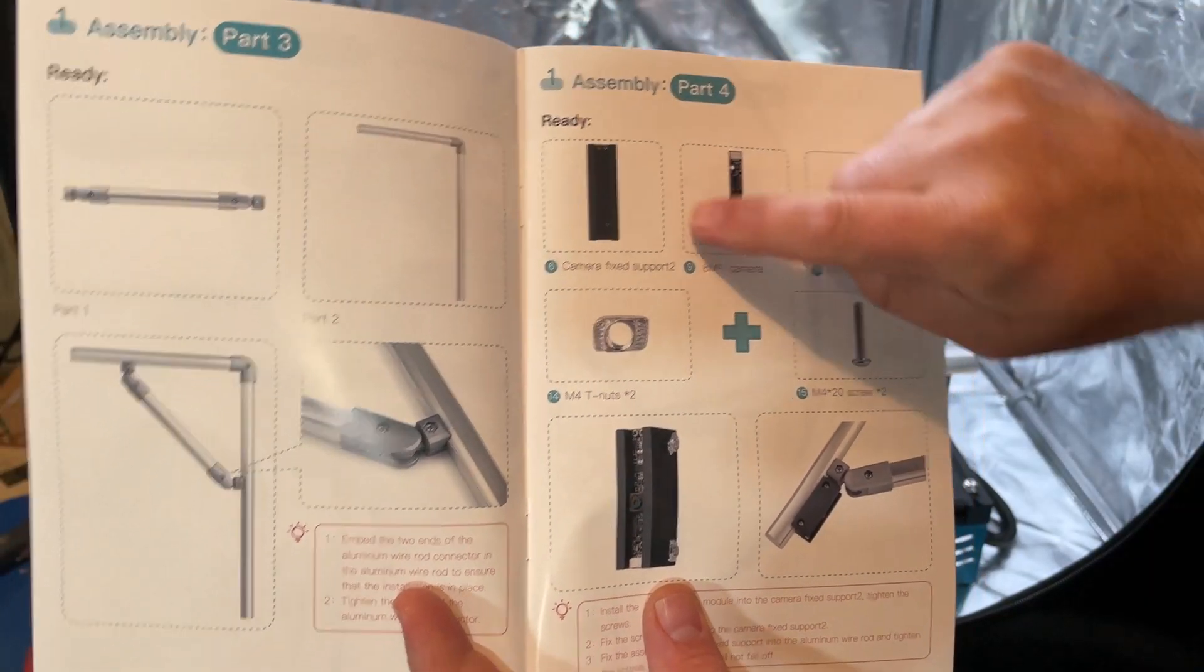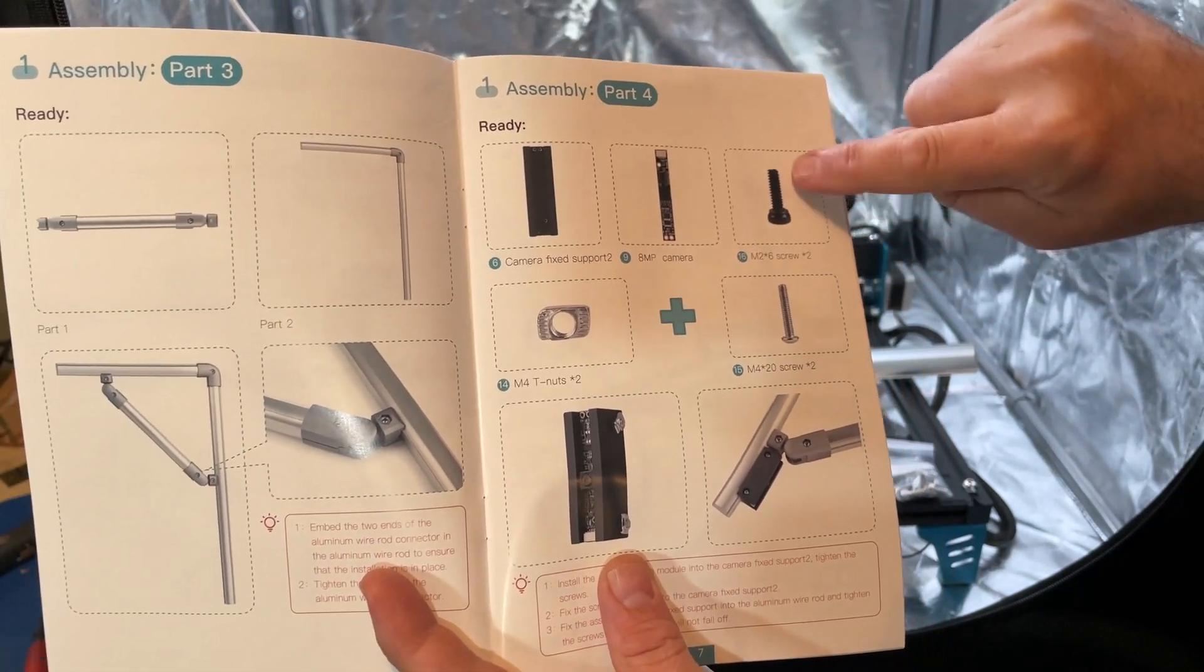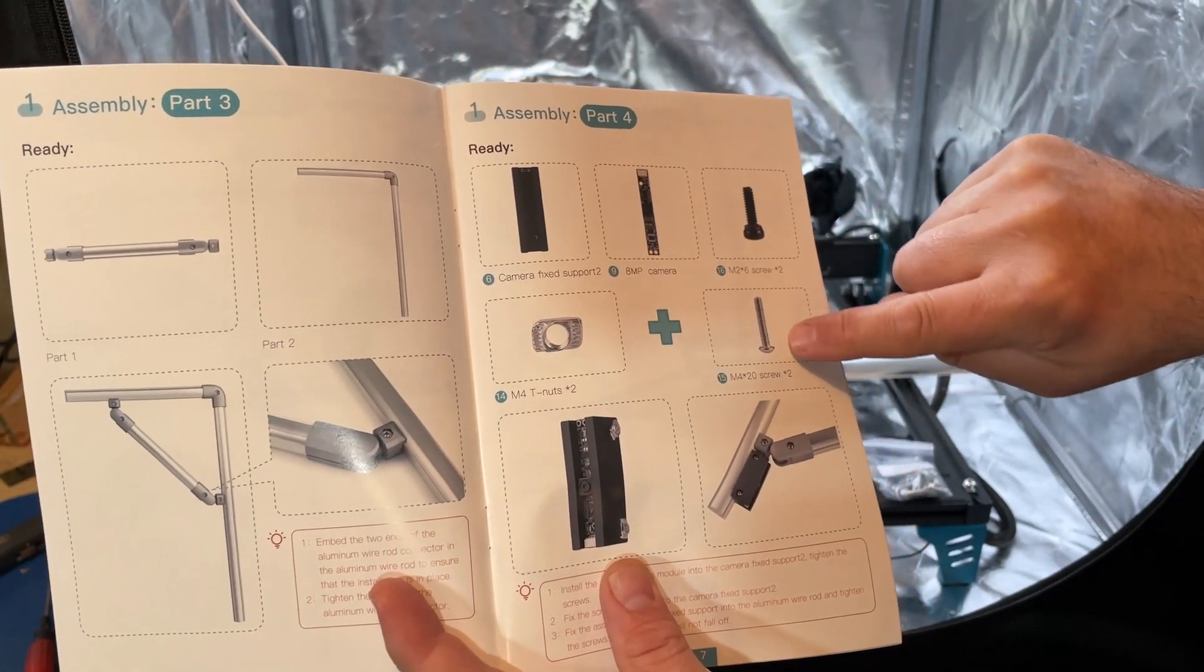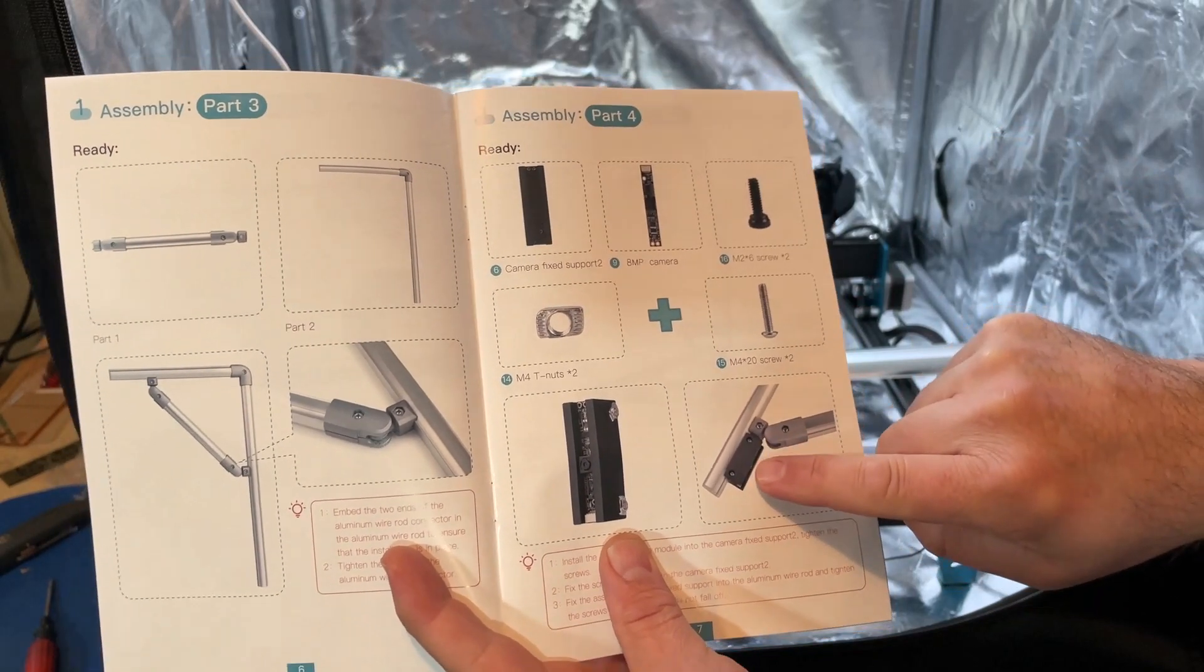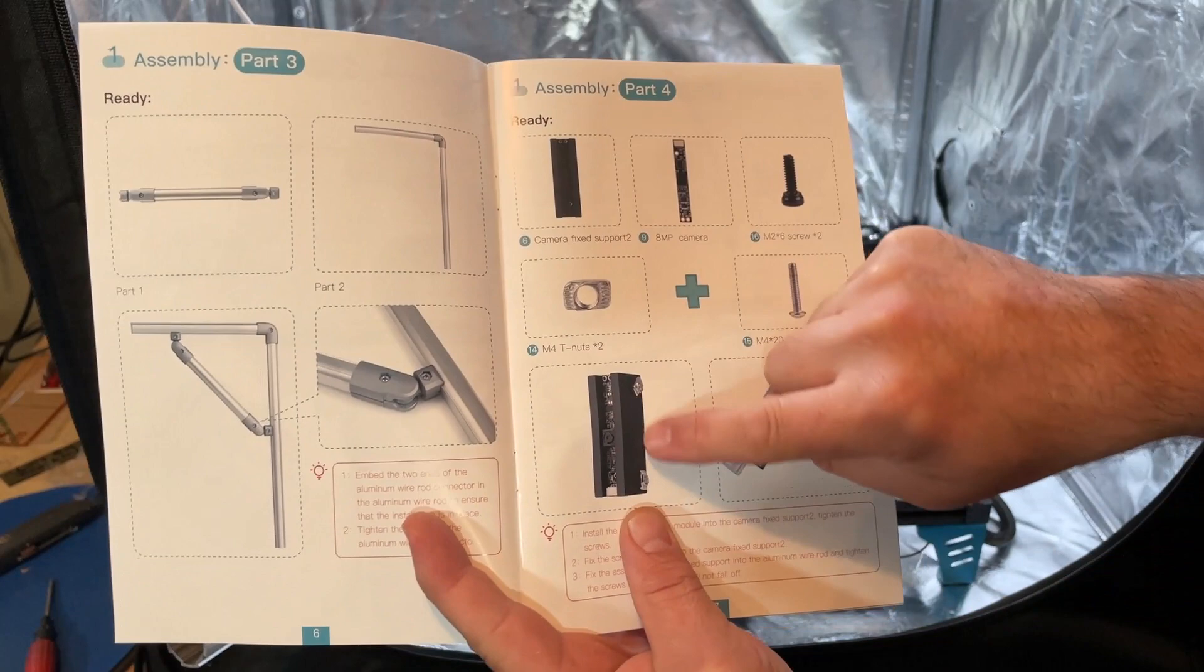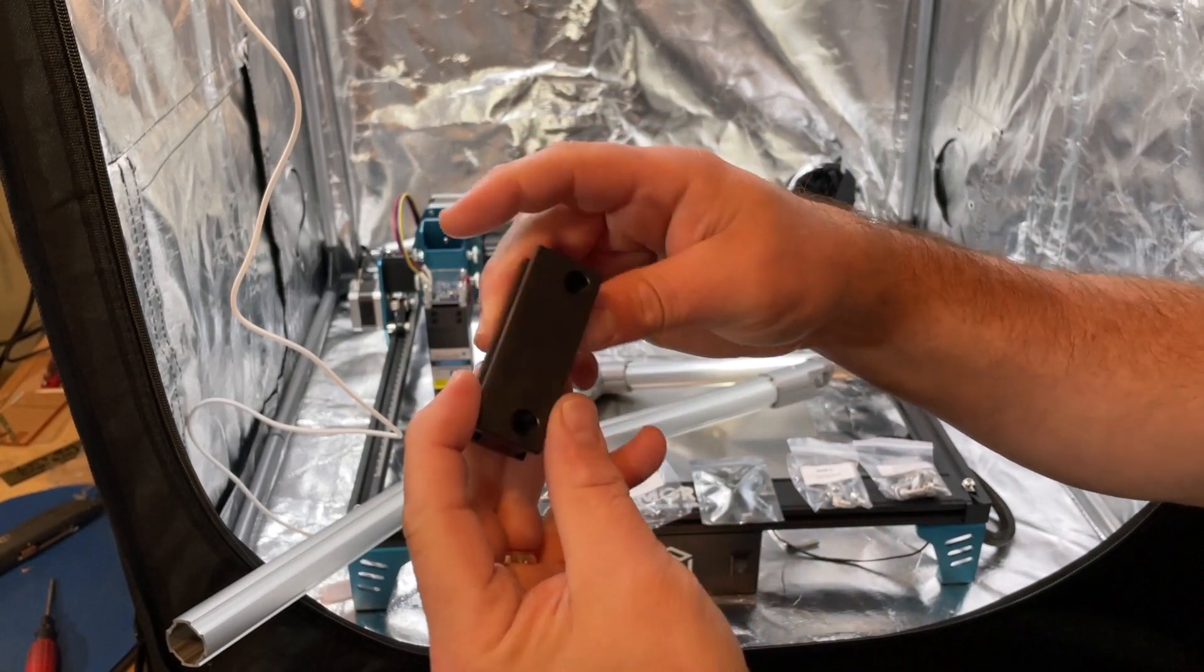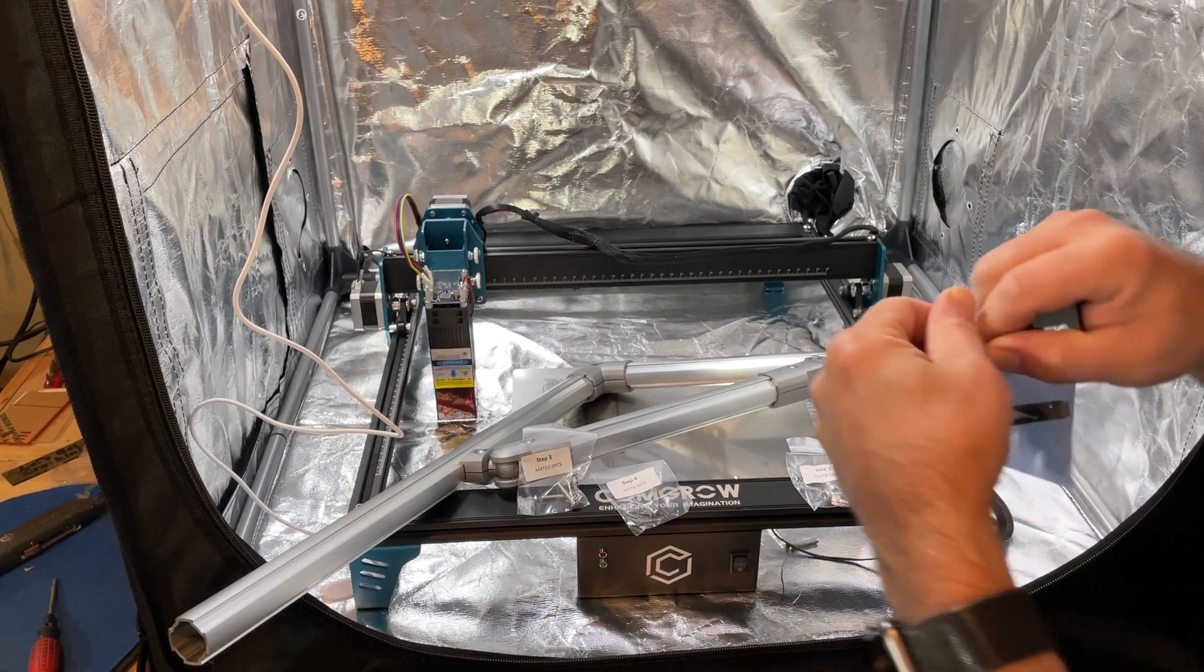It is time to switch to part four. We're gonna get the camera mount, the eight megapixel camera, we're gonna get two M26 screws, T-nuts, and M4-20 screws. It's going to be attached out near the end of the pole that we just built. First we're going to assemble it like this and then we're going to add it on. So here is the support. Notice it's got that rail like we used earlier. Camera's in a nice protective packet.